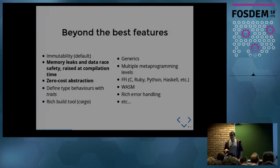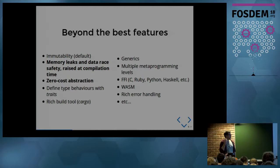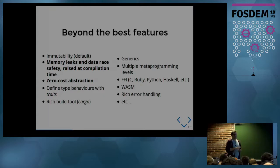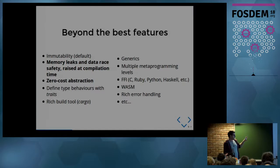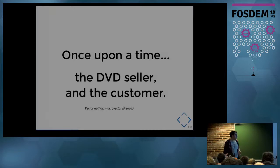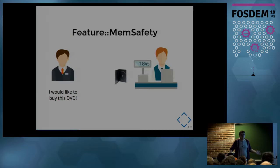Rust has many features, and it can be great for developers to have many features. But the learning curve is still high. I will only introduce what makes Rust so unique: memory safety, data race safety, and zero-cost abstraction. If you want to look at all the features of Rust, just check the website — it's clear enough. And to explain those concepts, I will introduce a short story: the DVD seller and the customer.